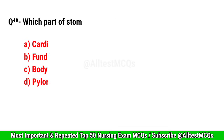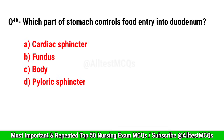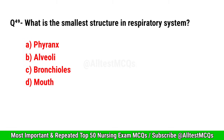Question No. 48. Which part of the stomach controls food entry into the duodenum? Correct option is D. Pyloric sphincter.